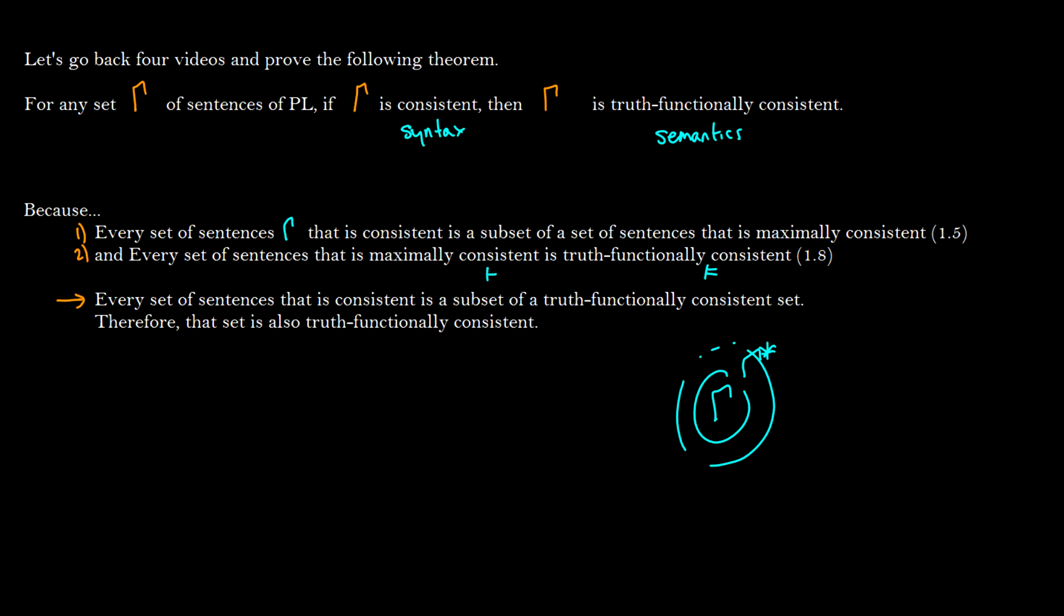Therefore every set of sentences that is consistent. So if we say okay if we have some consistent set gamma then we know it's going to be a subset of some truth functionally consistent set. So we could say let's pick an arbitrary set sigma.